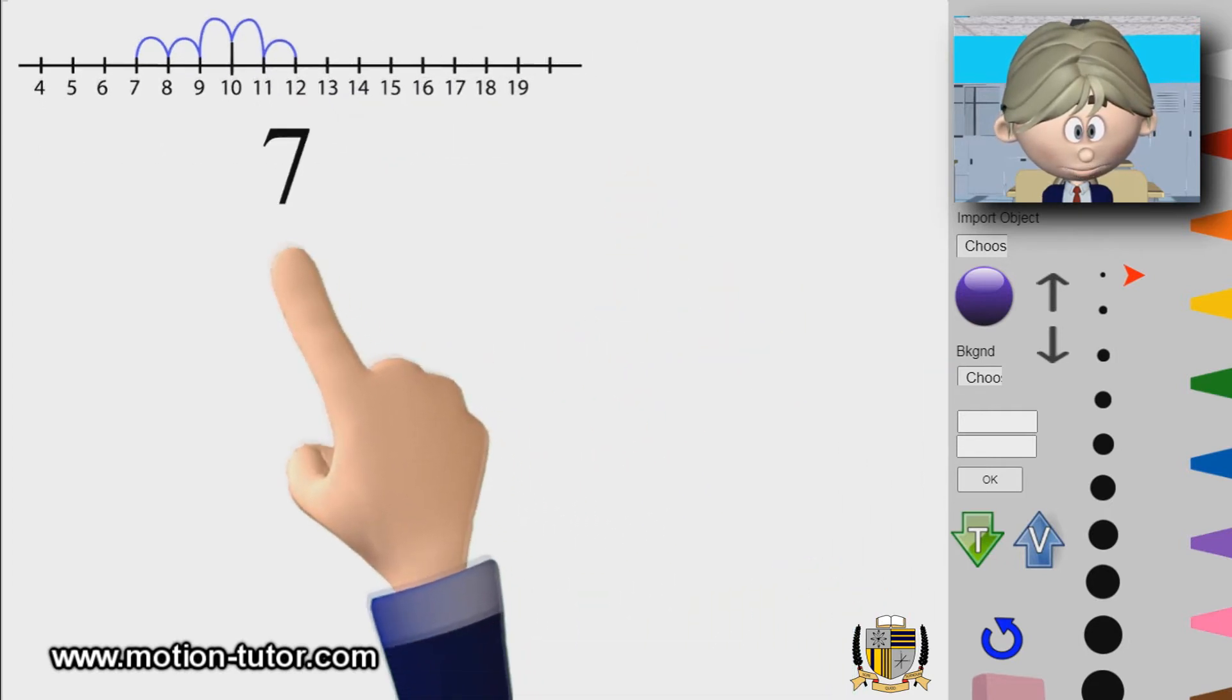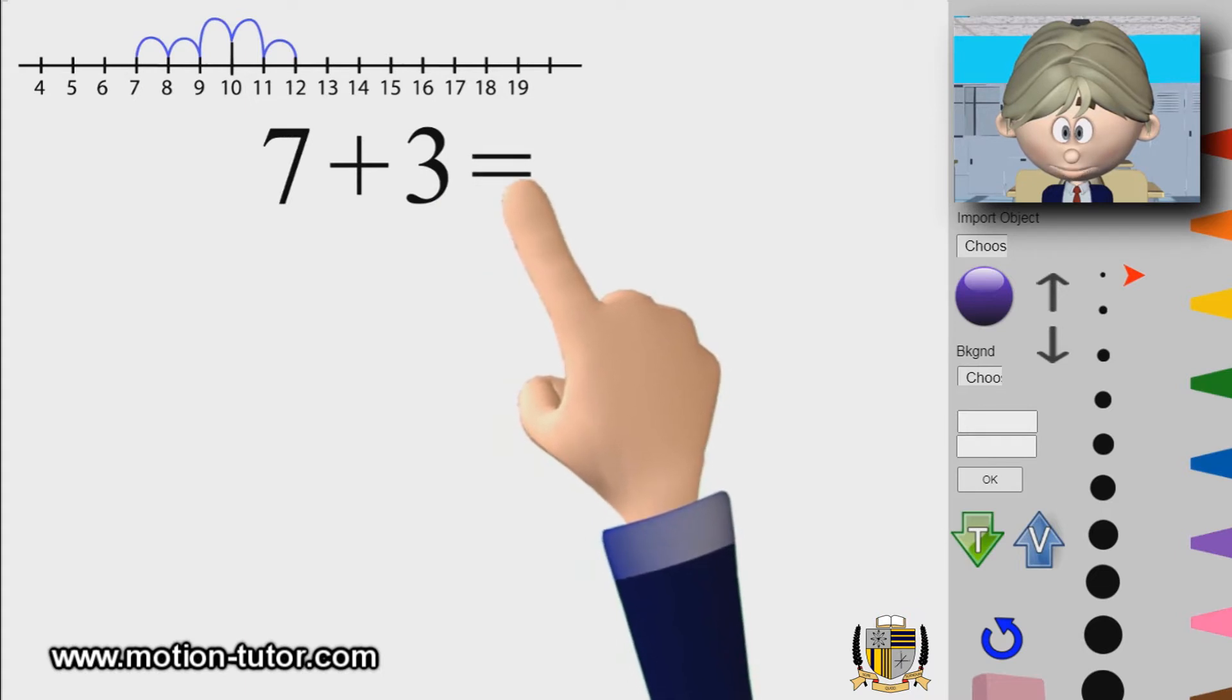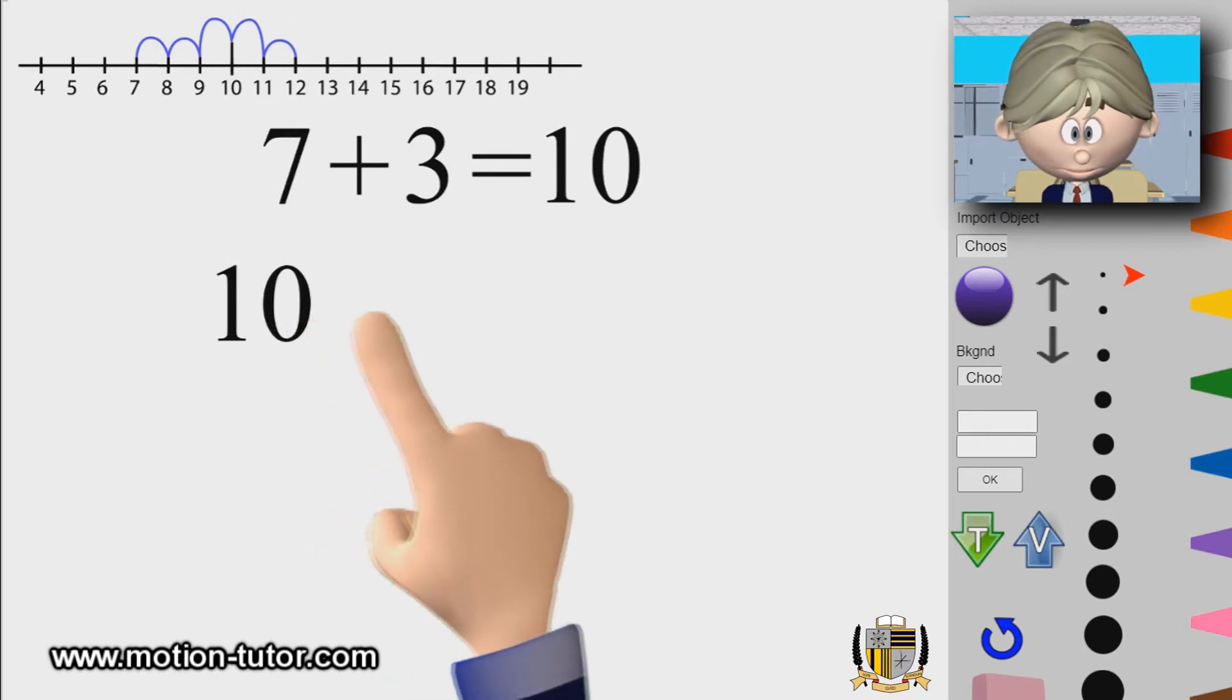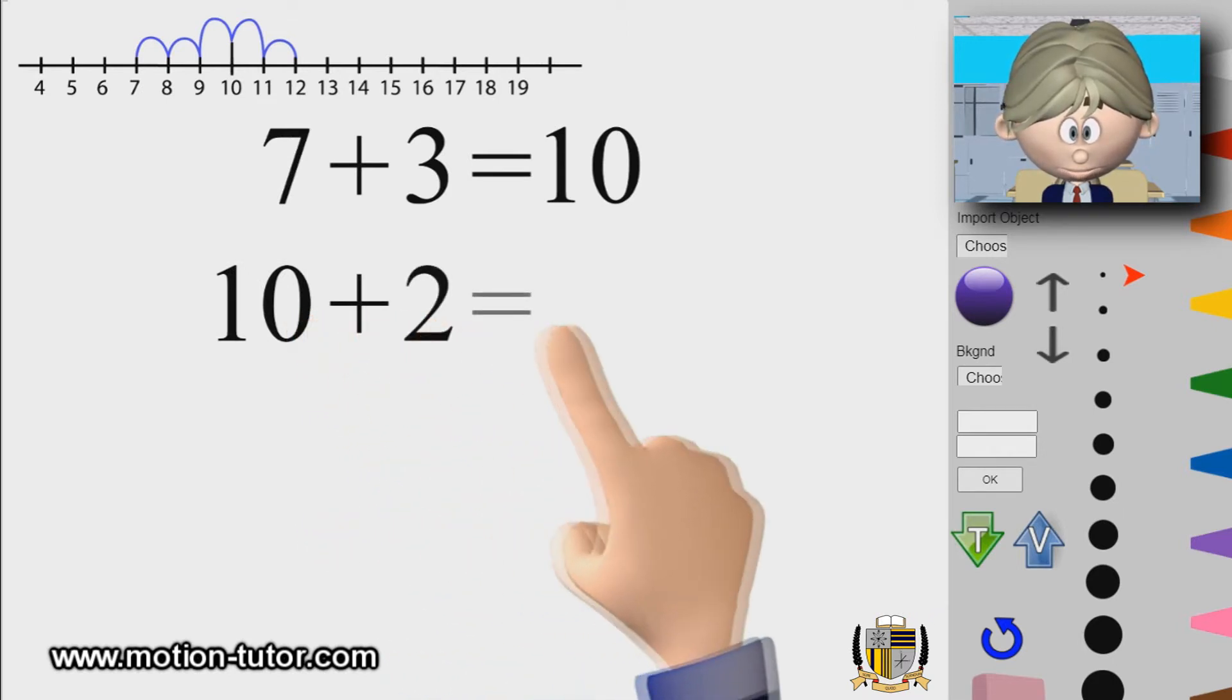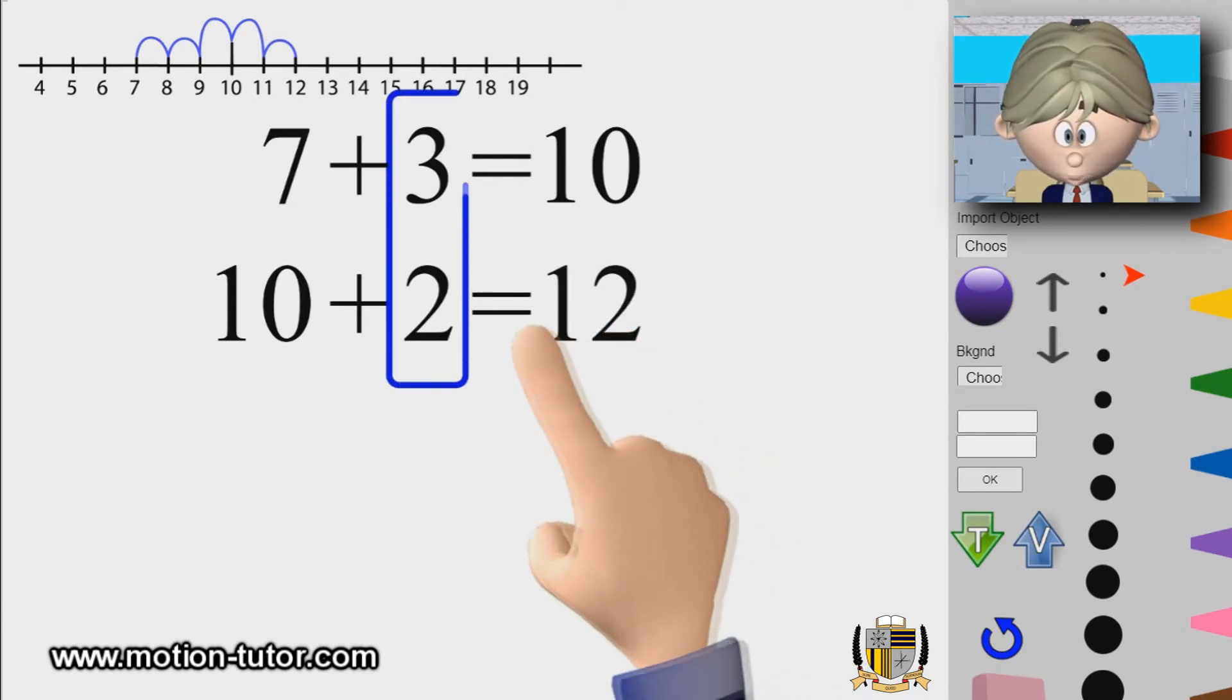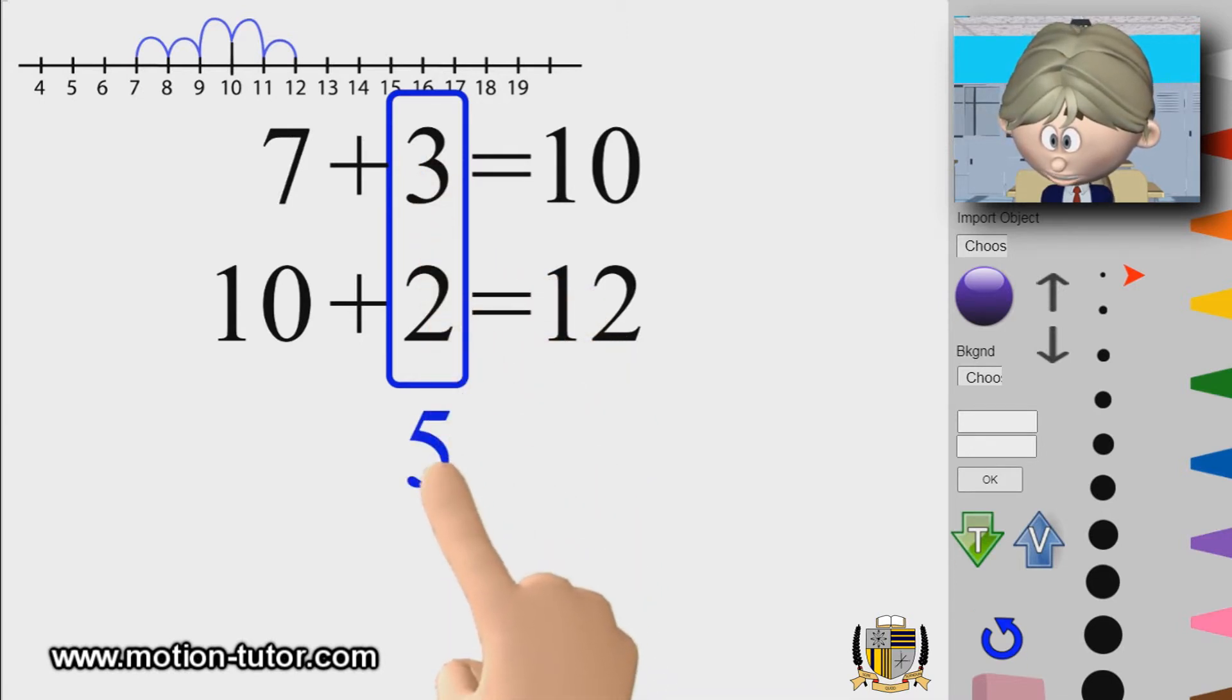So we have a 7 plus 3 that equals 10, so we needed a 3 to get to 10, and then from 10 we're going to add a 2 to get to 12, which is this final number 12. And we can clearly see these two numbers in here total 5. This is the 5 that helped us get from 7 to 12, which is pretty much the difference between 12 and 7.